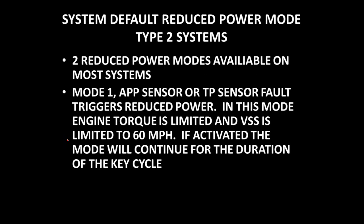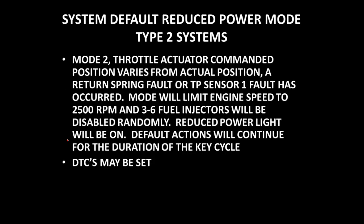Type 2 systems only have two types of reduced power modes available. In Mode 1, an APP or TP sensor fault will operate in reduced power, limiting engine torque, and vehicle speed is limited to 60 miles per hour for the duration of the key cycle. In Mode 2, it commands the throttle actuator to vary its position and limits engine speed to 2,500 RPM. It also shuts off fuel injectors to limit the amount of power available from the engine. You will also have a reduced power light come on, and you're going to probably get some DTCs set based on this.